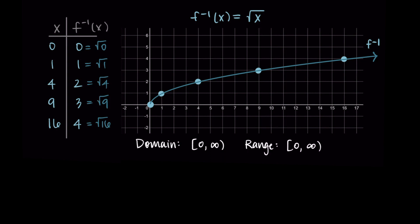It has a domain from zero to infinity and a range from zero to infinity. Square root of x is my parent function for radical functions. This is the most basic shape it takes.